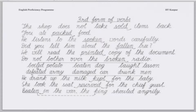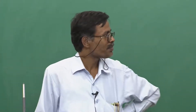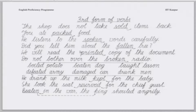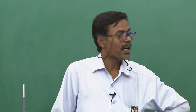In all the examples above, the adjective — the third form — comes before the noun it qualifies. But sometimes you need to put it after the noun. For example: 'He drank up the milk kept for the baby.' The word 'kept' is qualifying 'milk,' but because a phrase 'for the baby' is attached to it, the adjective must follow the noun.